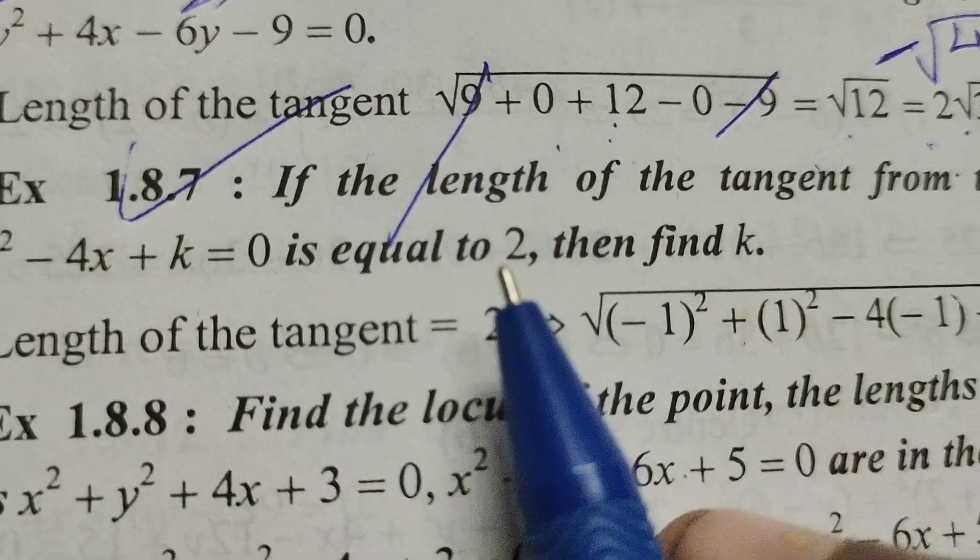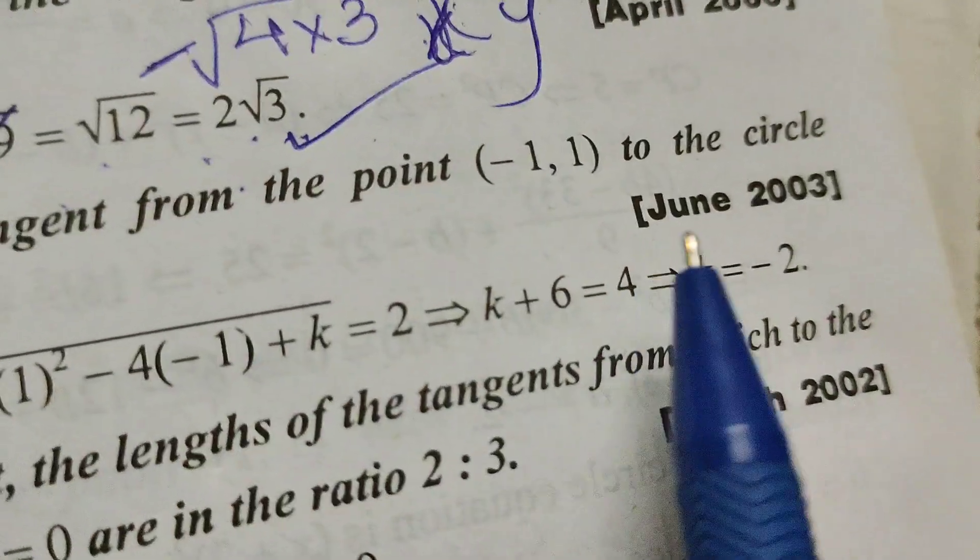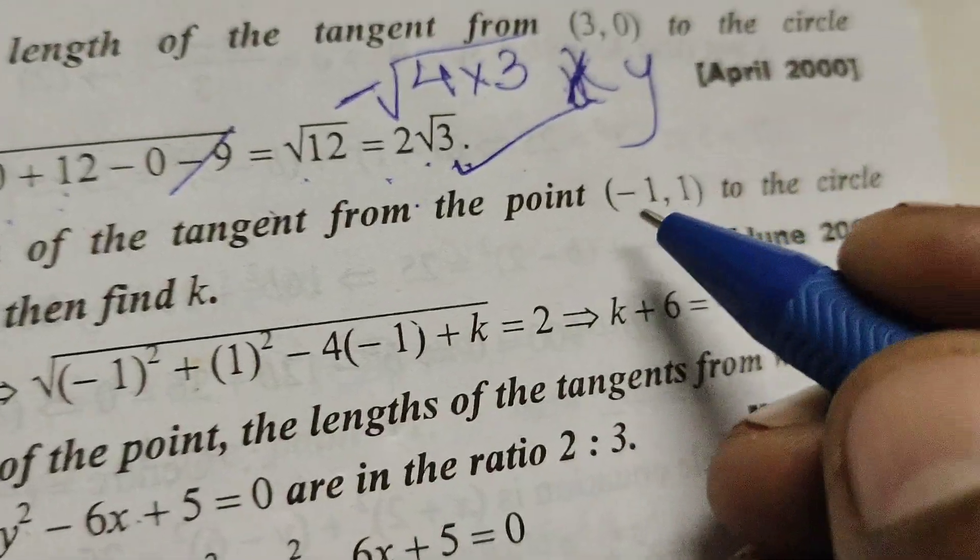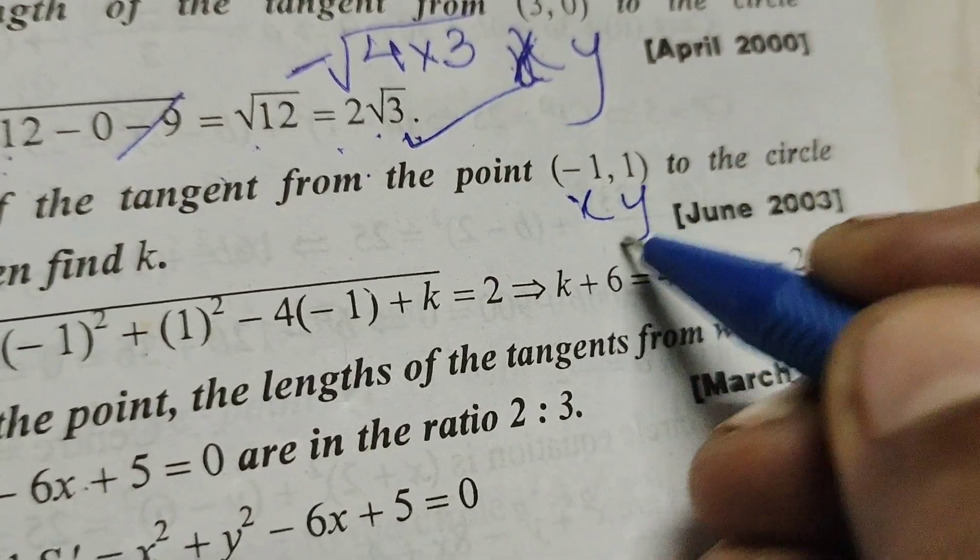Here given that length of tangent and this point. Find out value of k. Here given point considered x comma y.